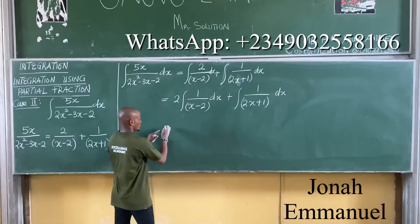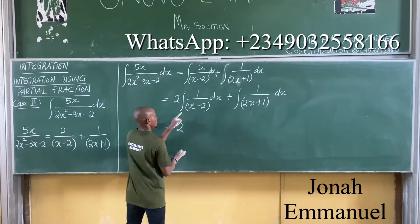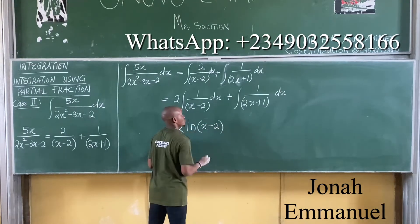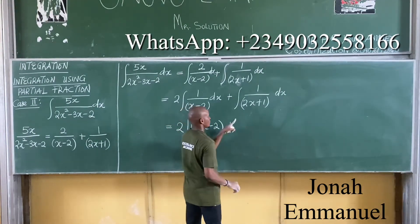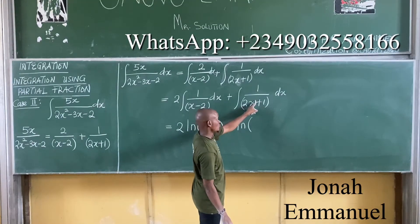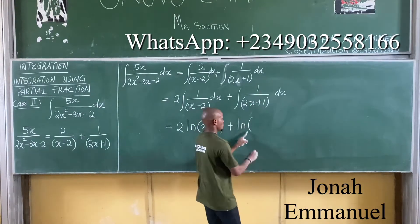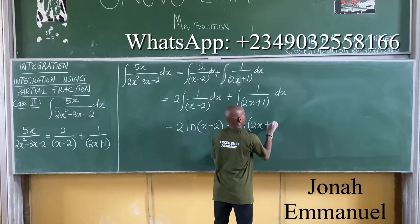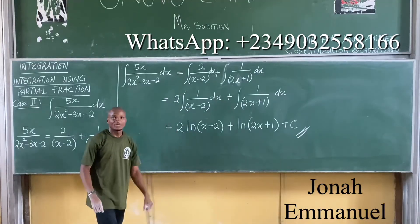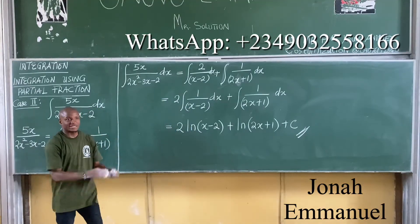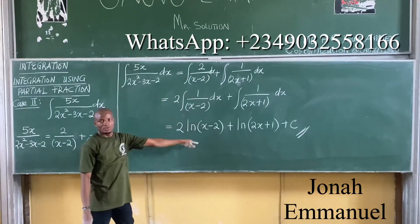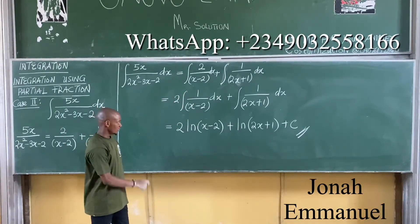We know what this one gives you. That's equal to 2, this gives you ln x minus 2, plus this one gives you ln 2x plus 1 plus C. This becomes the answer to this expression. So the task is simple. Resolve this to partial fraction, then integrate through. You have to practice this question yourself. Thank you.